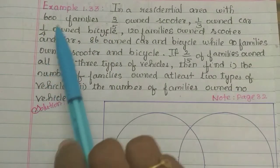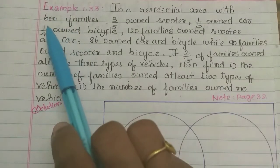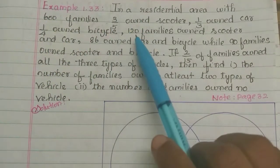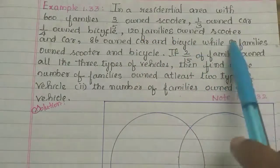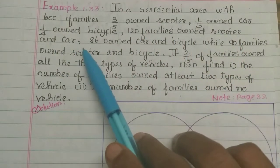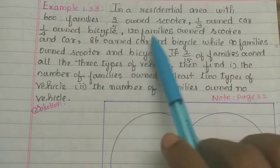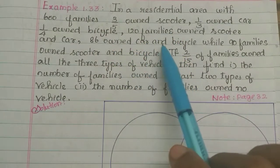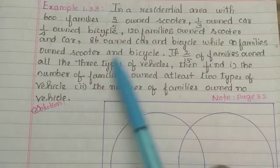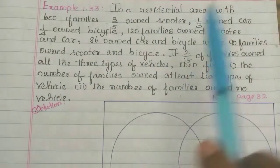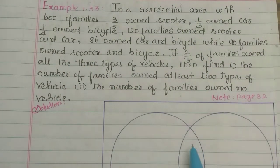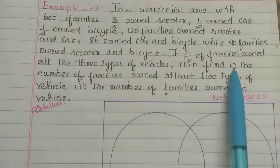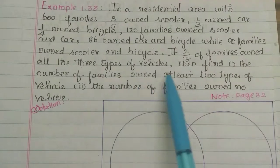In total 600 families, 1 by 4th used bicycles. Then 120 families owned scooter and car. 86 families owned car and bicycle. While 90 families owned scooter and bicycle. If 2 by 15 of families owned all 3 types of vehicles.